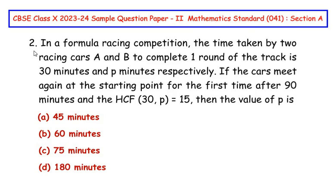This question is from the real numbers chapter. In a formula racing competition, the time taken by two racing cars A and B to complete one round of the track is 30 minutes and p minutes respectively. If the cars meet again at the starting point for the first time after 90 minutes and the HCF of the two numbers which are 30 and p is 15, then find the value of p.